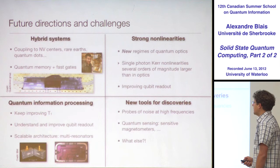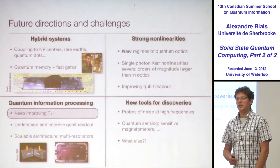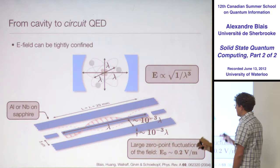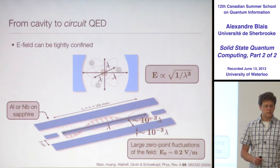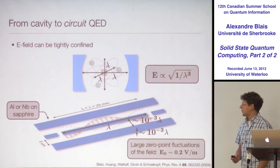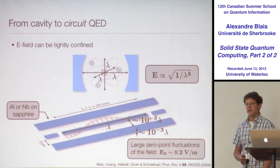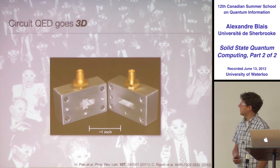How were recent improvements in T1 realized? The electric field in these systems is huge, which is great for coupling to the qubit dipole moment. But we've realized, starting with the Yale group, that it might be better to go to lower fields and larger volumes. For this reason, circuit QED goes 3D.